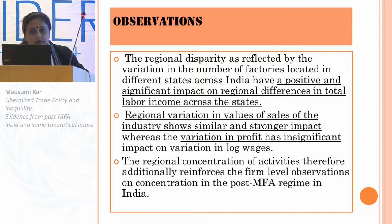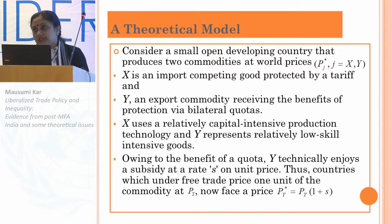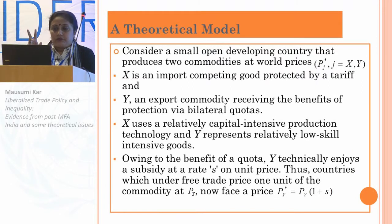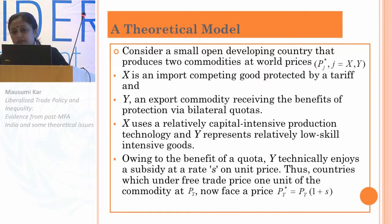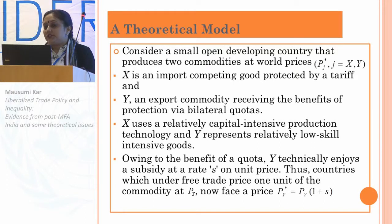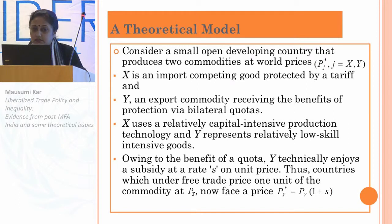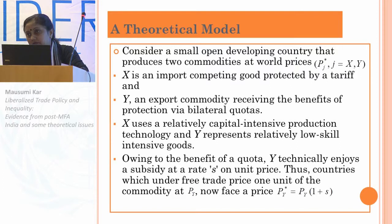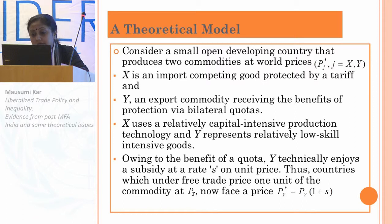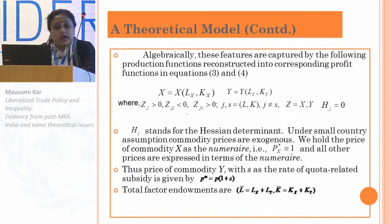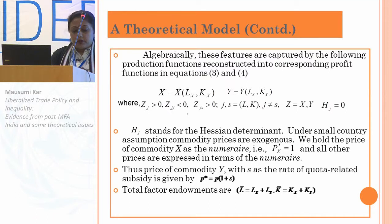Now we come to the theoretical model, where we consider a small open developing country that produces two commodities at world prices P-star J. There are two commodities X and Y: X is an import-competing good that is protected by a tariff, whereas Y is an export commodity receiving the benefits of protection via bilateral quotas. X is assumed to be relatively capital intensive, and Y is a relatively low-skill intensive good. Owing to the benefit of quota, Y technically enjoys a subsidy at rate S on unit price. Therefore the international price P-star Y is more than the free trade price, that is P-Y into (1 + S). The standard assumptions of perfectly competitive firms and full employment of resources are taken.